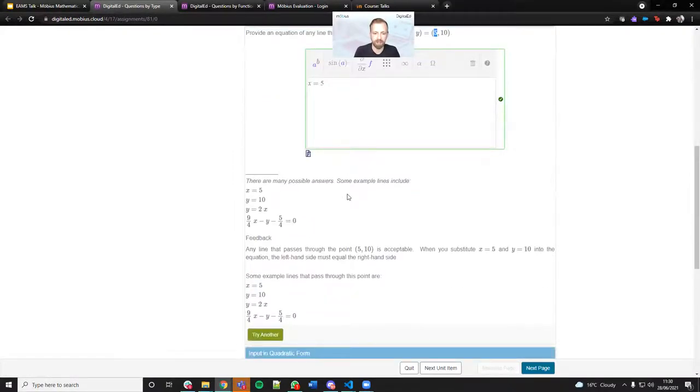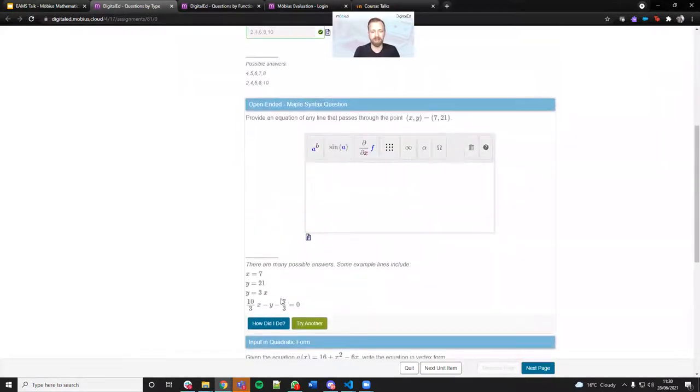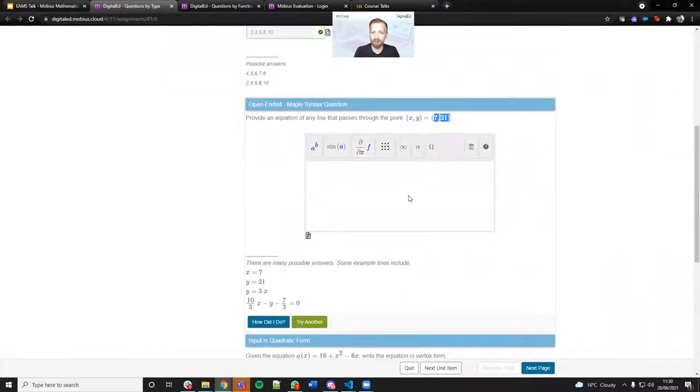Press how did I do on that? That's graded correctly. What's nice about this question is it's also got randomization. It's a randomized open question where we randomly generate the point that the function would pass through.